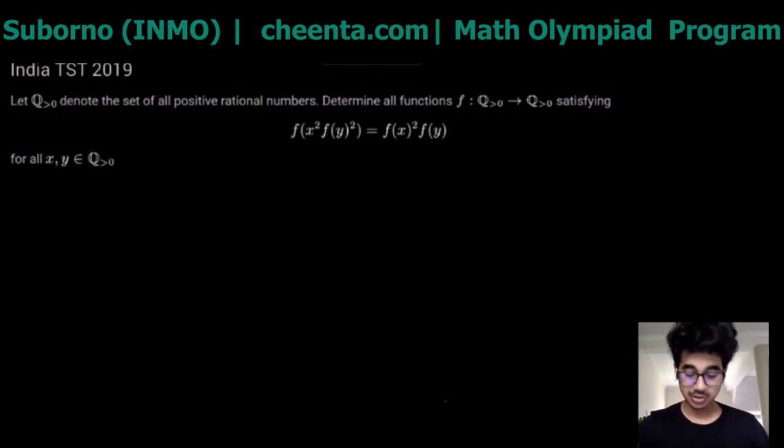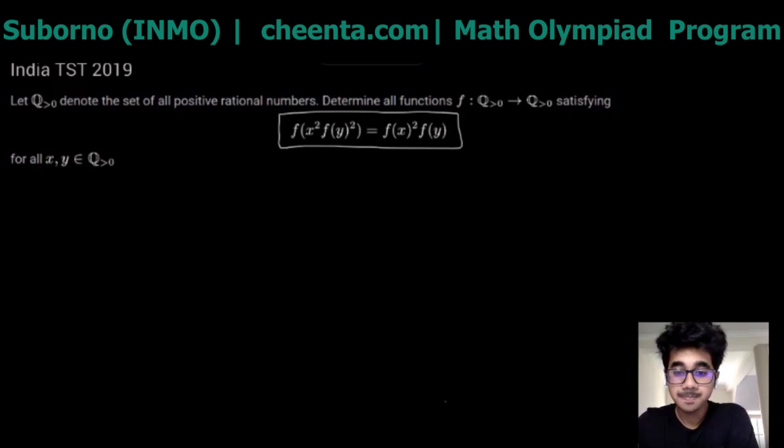Okay, so hopefully you guys tried it on your own. Let's begin with the solution of this problem. We have a set of positive rational numbers and the function is defined over it which satisfies this equation. Like we discussed, one idea of solving such problems is to plug in different values of x and y.